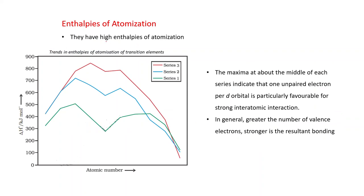Enthalpy of atomization - this is also known as the enthalpy of sublimation. Solid metal is converting into its atomic form in gaseous state. Whatever heat is supplied, that is known as the enthalpy of atomization. They have high enthalpy of atomization. This enthalpy of atomization depends on the strength of metal bond. You can see the same pattern as in case of melting point. The maxima at about the middle of each series indicate that one unpaired electron per D orbital is particularly favorable for strong interatomic interaction. More the number of unpaired electrons, stronger the bond, and stronger the bond, more the enthalpy of atomization. In general, greater the number of valence electrons, stronger is the resultant bonding.